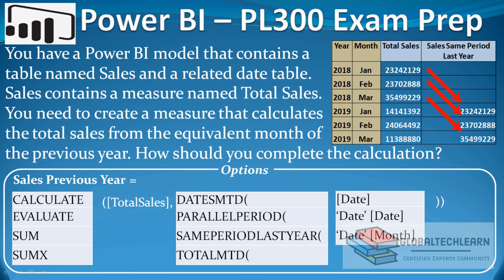As per the requirement, we have to achieve the sum of sales for the same month in the last year. In the exhibit on the right side, we can see year and month columns, and the total sales for January 2018 appears in the same period last year column for January 2019. Similarly for February 2018. Under the options, we have multiple date and time related Power BI functions such as CALCULATE, EVALUATESUM, SUMX, DATESMTD, PARALLELPERIOD, SAMEPERIODLASTYEAR, and TOTALMTD.